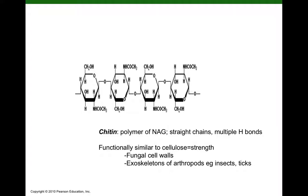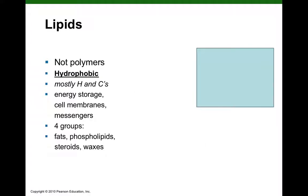Chitin is a polymer of NAG found in the cell walls of fungi and in the exoskeletons of arthropods. Just as in cellulose, these are beta-glycosidic linkages, with every other glucose unit flipped 180 degrees, and we don't have enzymes to hydrolyze those beta-glycosidic bonds. This concludes Unit 2, Chemistry, Part 4 on Carbohydrates. The next Chemistry PowerPoint will cover lipids.